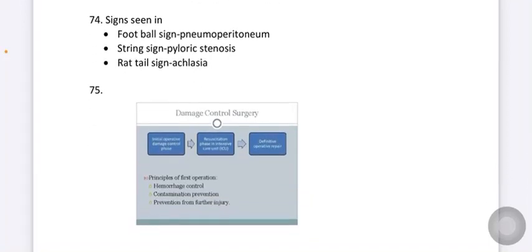Which of the following are not done in damage control surgery? The options given are hemorrhage control, contamination prevention, resuscitation, and vascular anastomosis. Here the answer is vascular anastomosis, as hemorrhage control, contamination prevention, and resuscitation are done in damage control surgery.